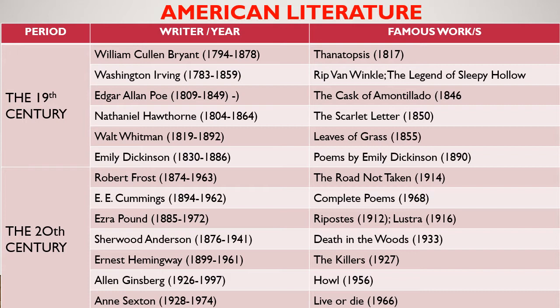Washington Irving was the author of the first American work to become successful internationally. He was an American short story writer, essayist, biographer, historian, and diplomat of the early 19th century. He is best known for his short stories Rip Van Winkle and The Legend of Sleepy Hollow, both appearing in his collection The Sketchbook. He was born April 3, 1783, in Manhattan, New York, and died November 28, 1859, in Sunnyside, Tarrytown, New York.